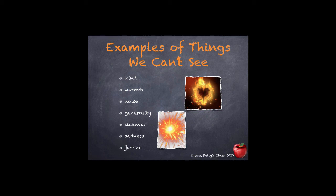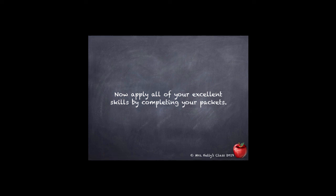Here are examples of things we can't see. We just talked about things we could see — these are nouns we can't. Examples include wind, warmth, noise, generosity, sickness, sadness, and justice. The first picture with the fire heart reminded me of warmth — warmth is wonderful and cozy. When it's freezing cold outside, you can feel that warmth and it just makes you feel good. The bottom picture looked like noise to me — we know noise is there, we can hear it, we just can't see it.